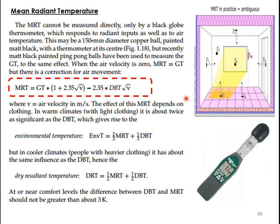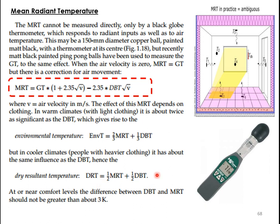To calculate MRT, we need the globe temperature from the black globe thermometer — a 150 mm diameter copper ball painted matte black with a thermometer at its center. It absorbs air temperature, wet bulb temperature, and radiation effects to give the globe temperature. There is also environmental temperature and dry resultant temperature, which can be seen later.